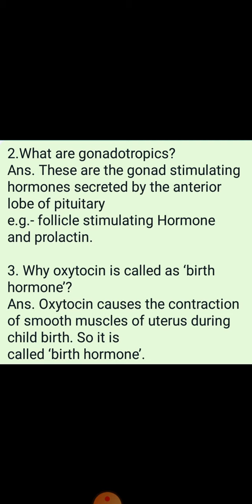If asked which part of the pituitary secretes oxytocin — it is secreted by the neurohypophysis, also known as pars nervosa or posterior pituitary. The posterior pituitary releases two hormones: oxytocin and vasopressin. These two hormones are actually synthesized by the hypothalamus and then transported to the neurohypophysis, where they act.